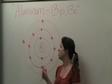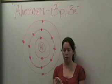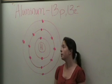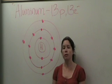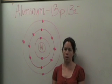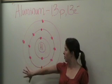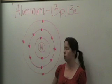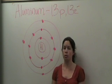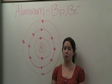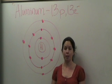Similar to nitrogen, aluminum does not have a full outer shell, and it can undergo reactions with other atoms. For this class, I will not ask you to draw any shell models for atoms that go past the third shell. So you will not have to do anything past 18 electrons going into the shell model. Good luck on your homework.